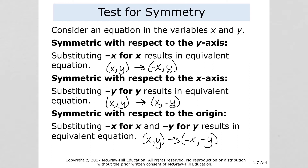If we plug in negative values for both x and y and the result is the same function as the original, then we know we have a function that's symmetric with respect to the origin — without even looking at the graph.